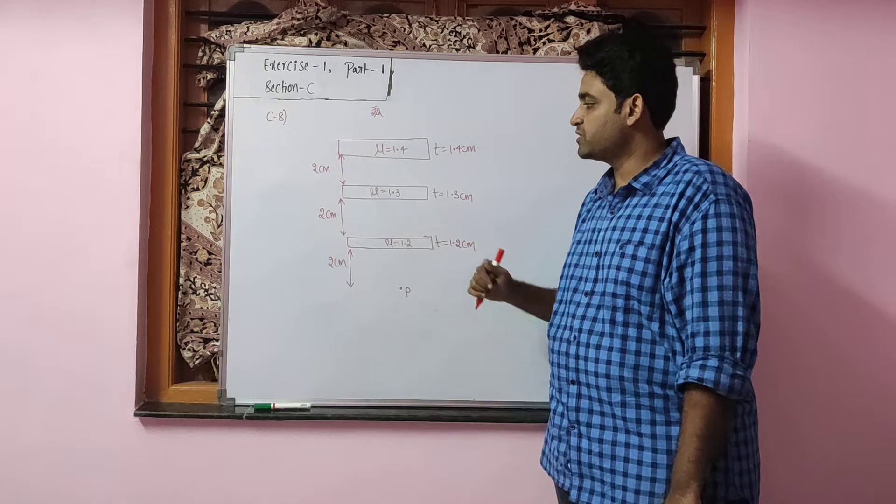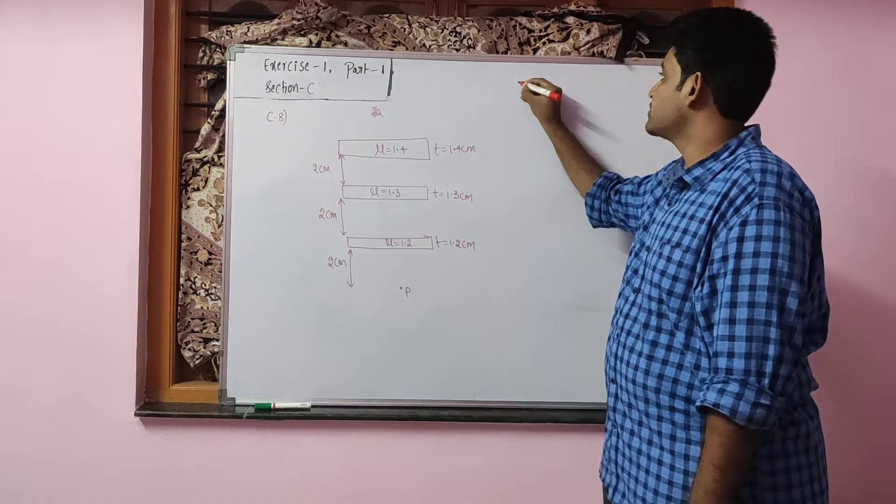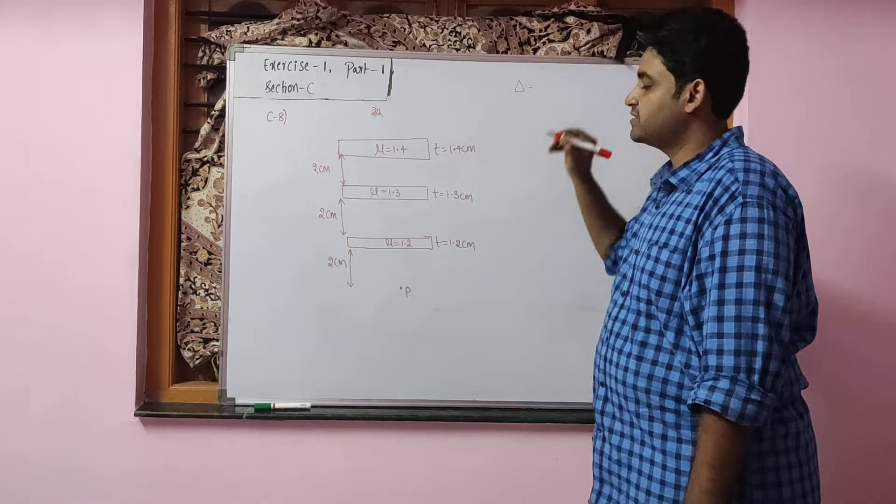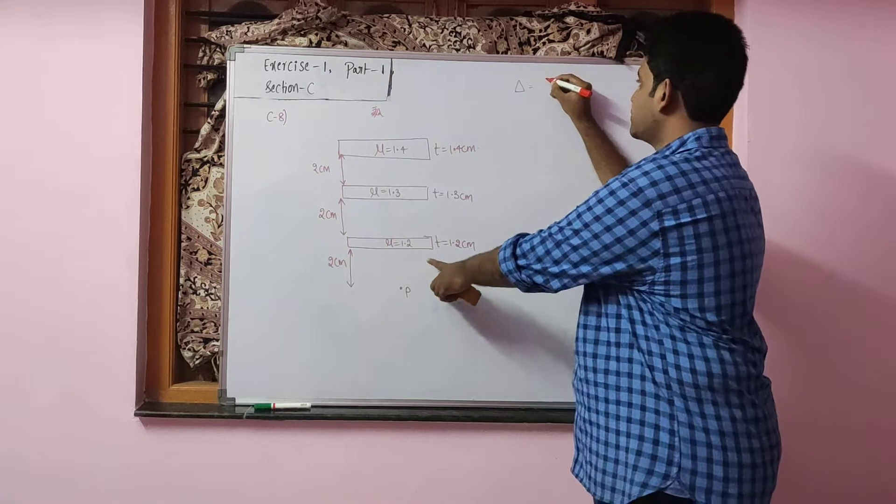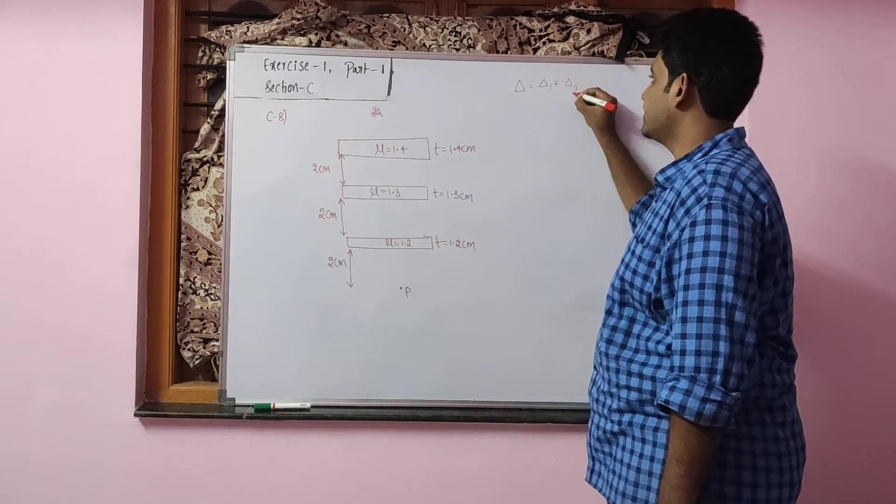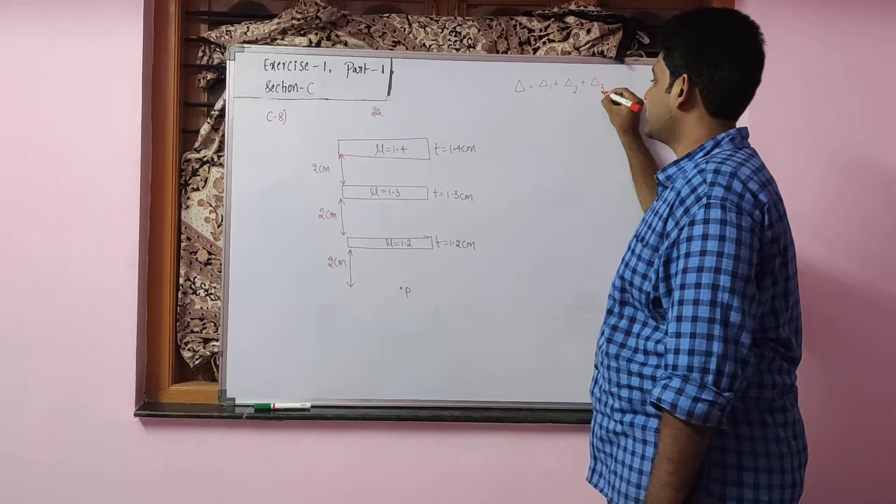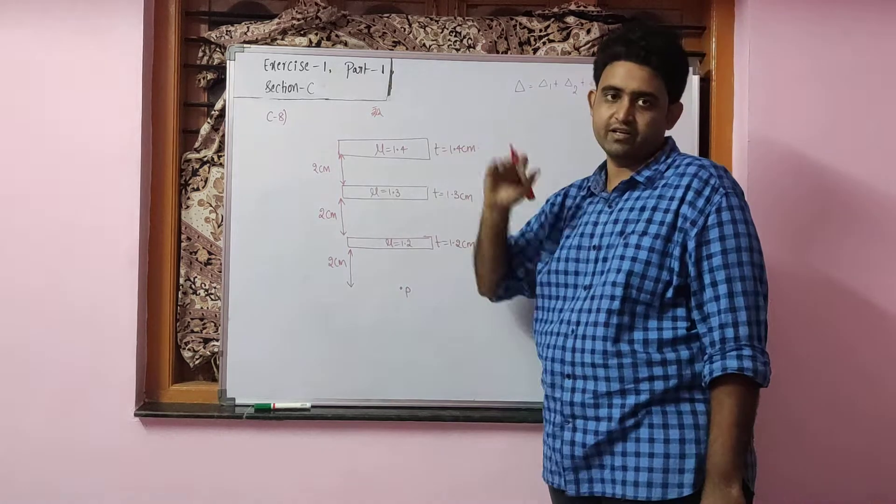By superposition principle, the total shift produced in the image will be shift due to the first glass slab plus shift due to second glass slab plus shift due to third glass slab. All are in the upward direction.